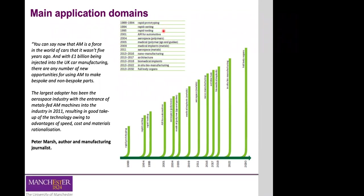It was in the 2000s that adoption took a big leap when the automotive industry started using powder bed fusion systems to create plastic parts for cars. Then, with the development of machines that can process metals to create 3D parts using high-performance metals, additive manufacturing really took off — mainly because of the adoption of metal sintering and metal powder bed fusion by the aerospace industry.